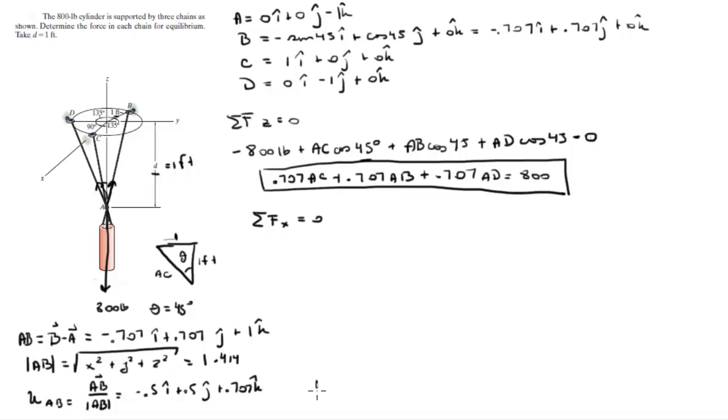But you also know that the force AB or the tension AB is equal to the magnitude of AB times the unit vector in the AB direction. This means that multiplying this unit vector by FAB will give you the Cartesian vector form of that vector, which is negative 0.5 AB in the i plus 0.5 AB in the j plus 0.707 AB in the k.